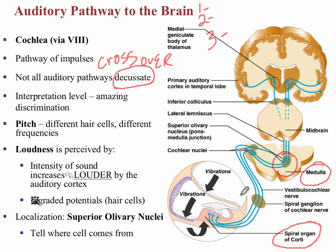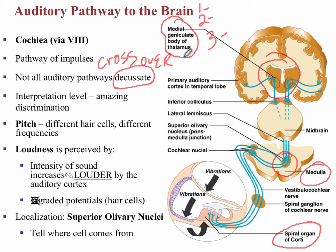The second-order neuron is going from the medulla up into the thalamus, the relay center of the brain. And this happens to be a specific nucleus called the medial geniculate nucleus — remember, the lateral geniculate nucleus was involved with vision. And then finally, the destination for the third-order neuron, where interpretation occurs, is going to be the primary auditory cortex.